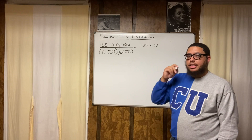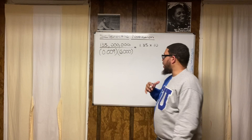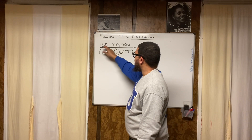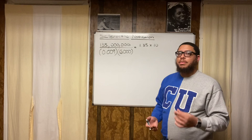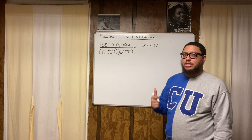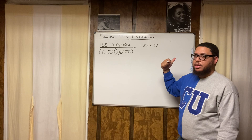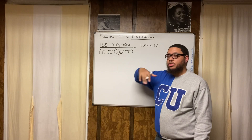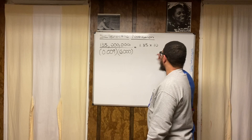So this becomes 1.35 times 10, and the exponent equals the number of spaces I moved the decimal point — 8 spaces. The next question is whether it should be positive 8 or negative 8. It's positive 8 because to get back to the original number, 135 million, I'd move the decimal to the right. Moving to the left would create a smaller decimal, which would be a negative exponent. So I get 1.35 times 10 to the eighth.